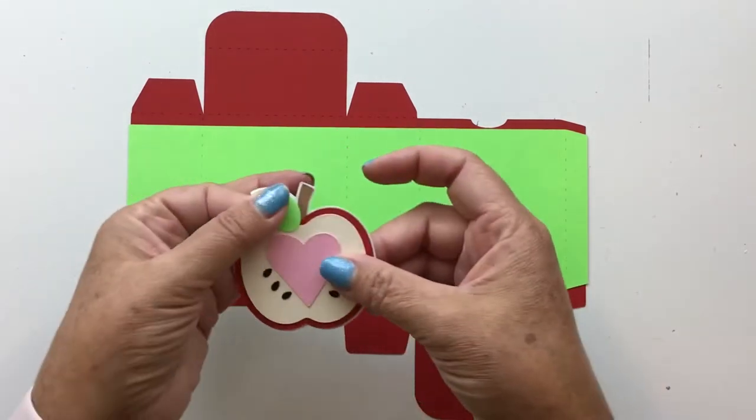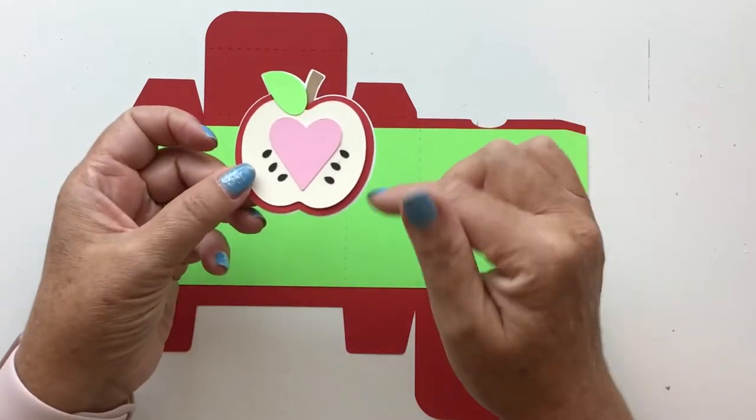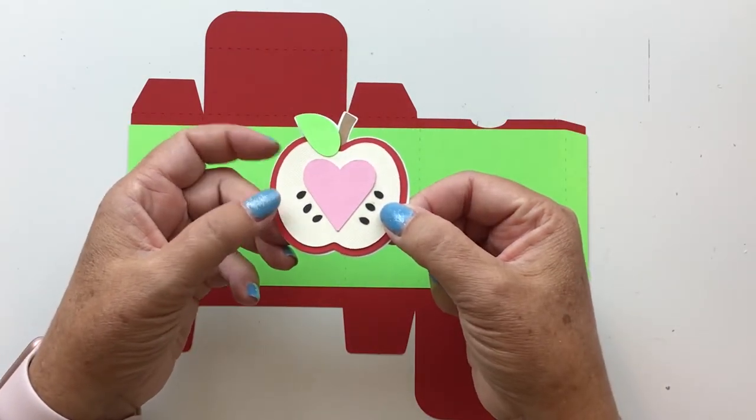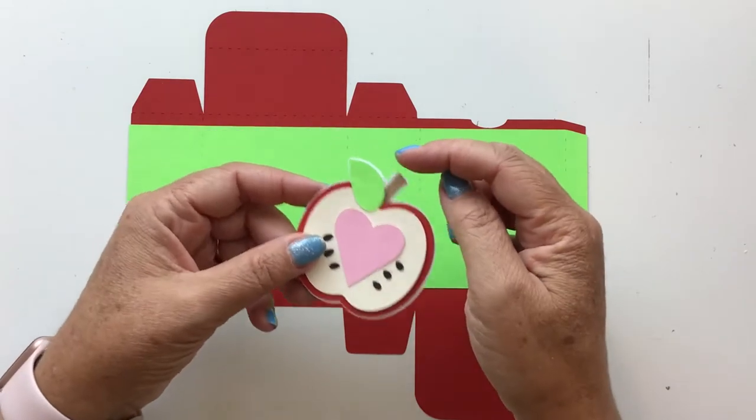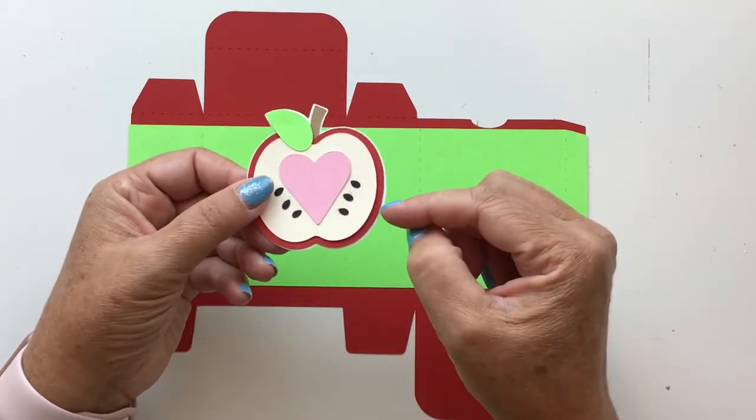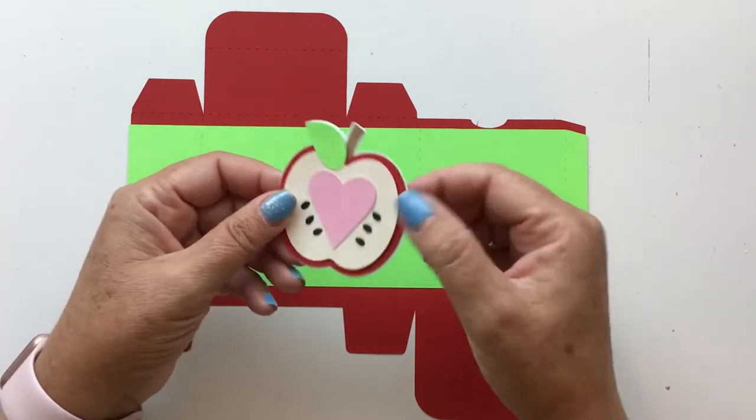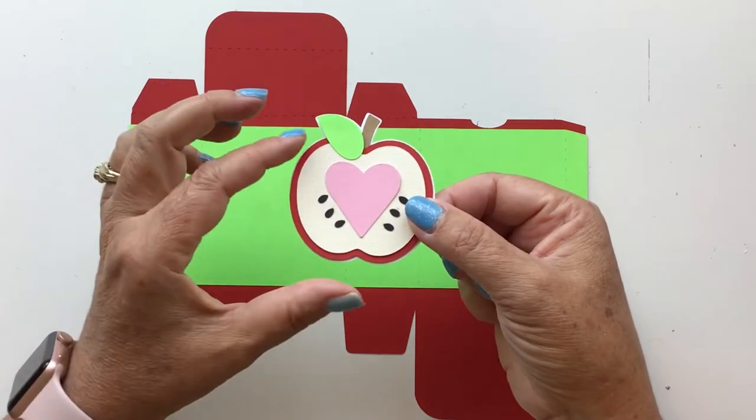What you get with the boxes is going to be a little different depending on which box you've purchased, but for this one you would get your apple and it's a layered apple. I've already gone ahead and put it together.